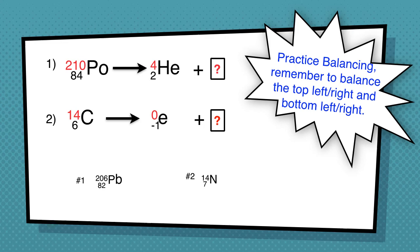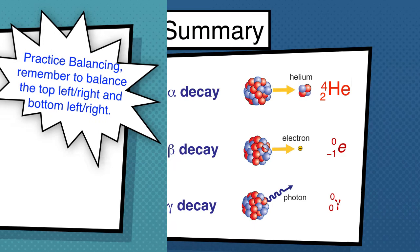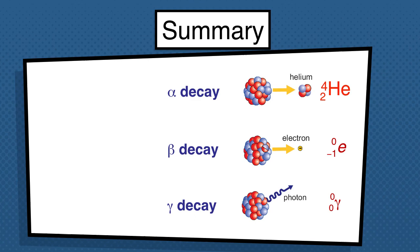For the second answer, we have nitrogen-14. On the left, notice we have 14 with the carbon, so on the right we have to have 14 on top. On the bottom on the left, we have 6; on the right, we have negative 1. So the beta particle is 0, negative 1, E and the gamma particle is 0, 0.